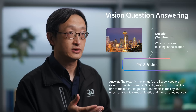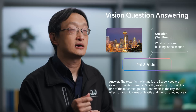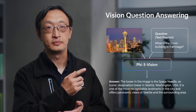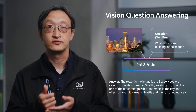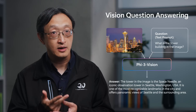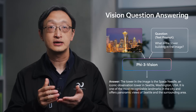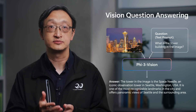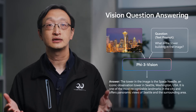Let me use a few examples to show you what the model can do. A typical use case of a vision language model is vision question answering, where the model is asked to answer questions regarding an input image. As illustrated in this example, the question — what is the tower building in the image — requires an understanding of language, vision, and common sense knowledge to answer. For example, the model needs to not only recognize the tower as the Space Needle, but also know that it is one of the most recognizable landmarks in the city and offers panoramic views of Seattle and the surrounding area.